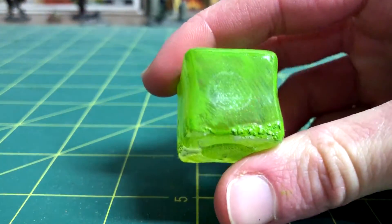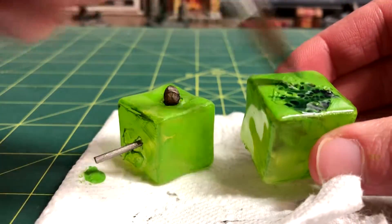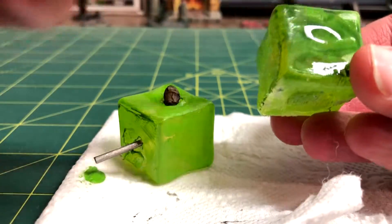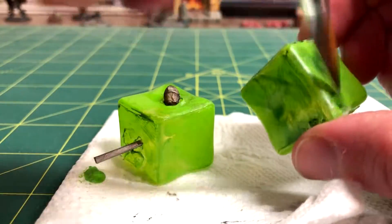To add variation to the cubes, I painted on a layer of Coilia Green shade. This stuck surprisingly well considering that it went over some gloss varnish.